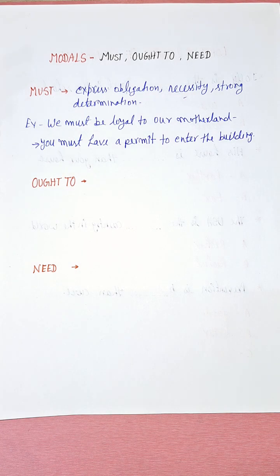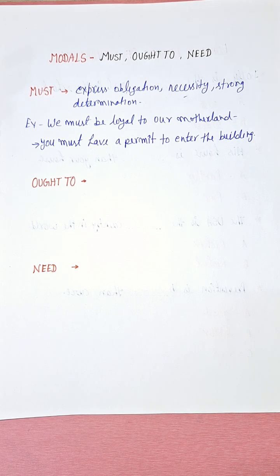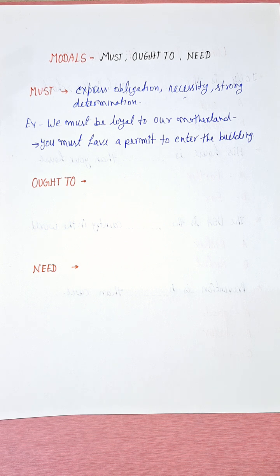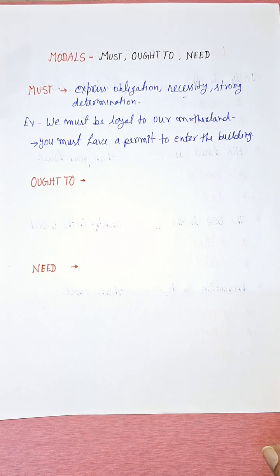Let's take one more example: 'You must collect the car before tomorrow.' This can also illustrate certainty. For example: 'This must be the right way to reach our destination.' Here, certainty is being expressed.